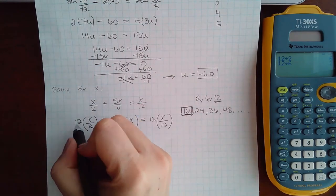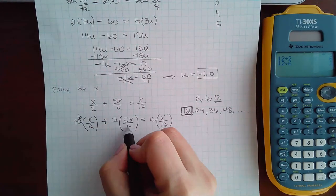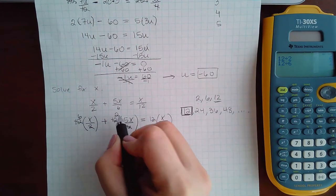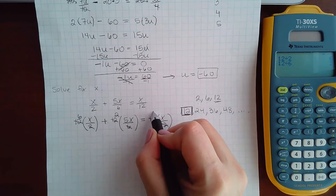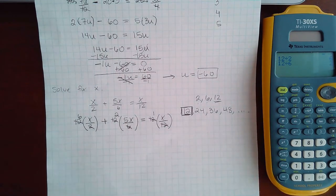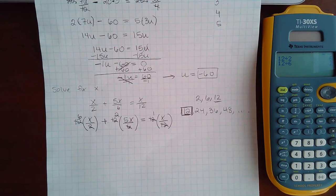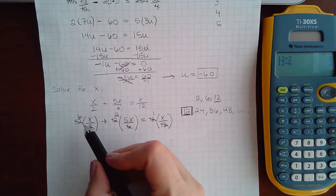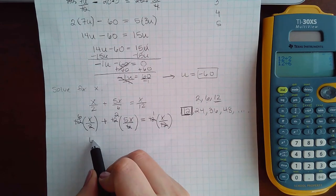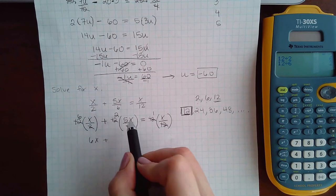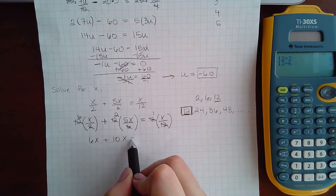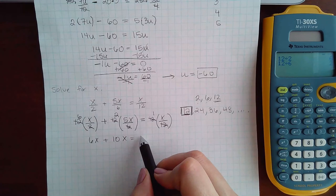Reduce the 2 with the 12, you get 6. Reduce the 6 with the 12, you get 2. Reduce 12 with 12, and you get 1. Then if we want to eliminate these parentheses, which is step 2, you just multiply. So 6 times x is 6x. 2 times 5x is 10x. And 1 times x is 1x.